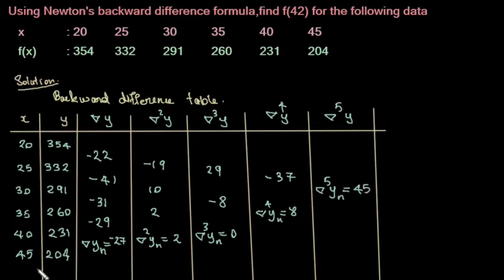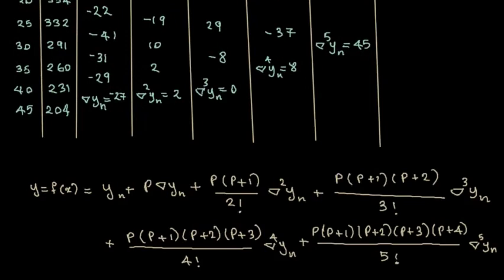Next, we have to write Newton's backward difference formula after the term ∇⁵. Here I have written the formula for f(x). Next, we have to substitute the values.